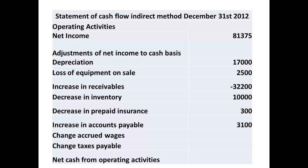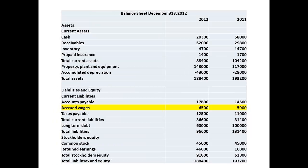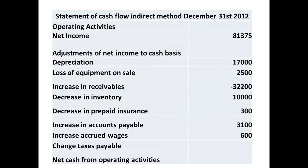Now we look for any changes in accrued wages. Accrued wages have increased from $5,900 to $6,500. This change of $6,900 represents wages not paid out, so we add this figure back in.